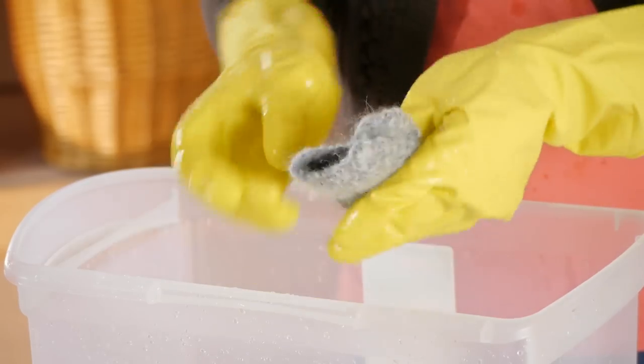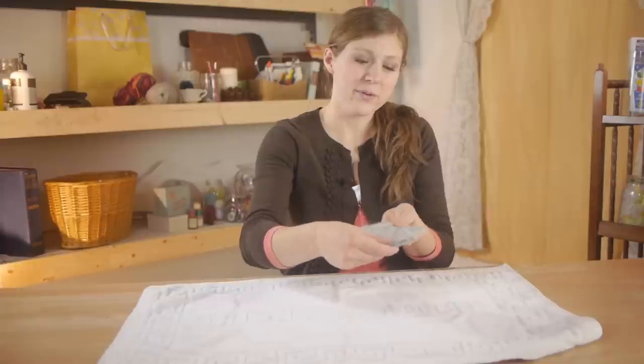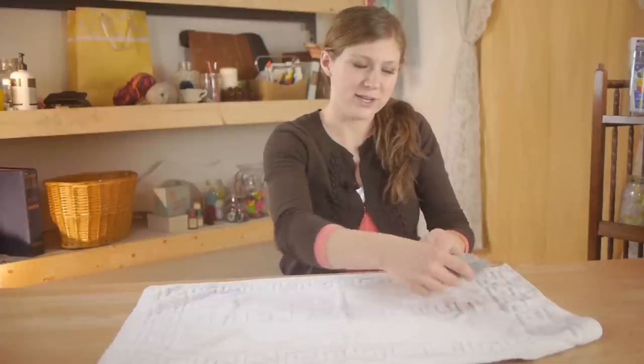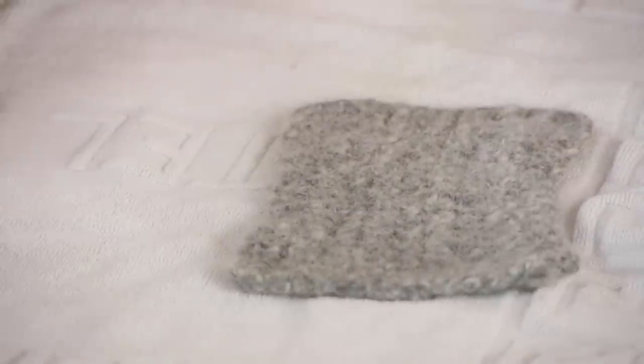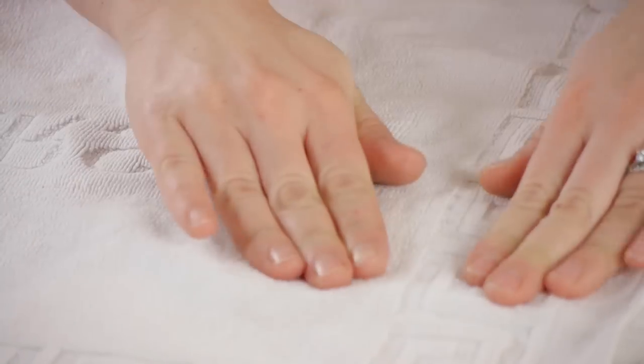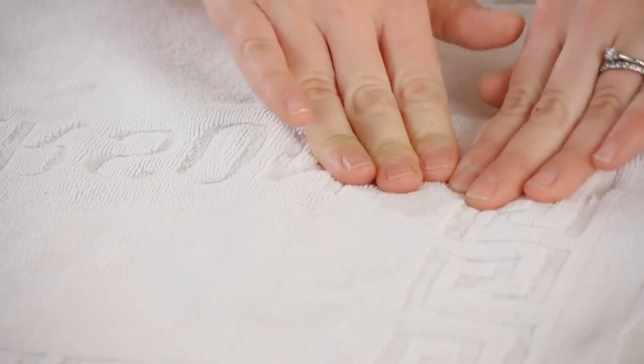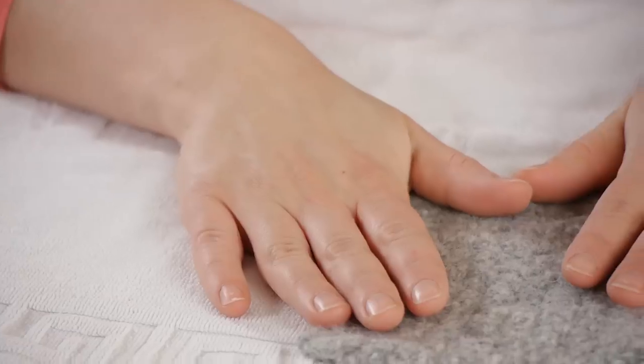And then you're going to take your felted project, lay it down on a dry towel. I'm going to take the other side of the towel and press out as much moisture as we can. Once you've pressed as much water out of your project as you can, lay it on a dry towel and let it air dry.